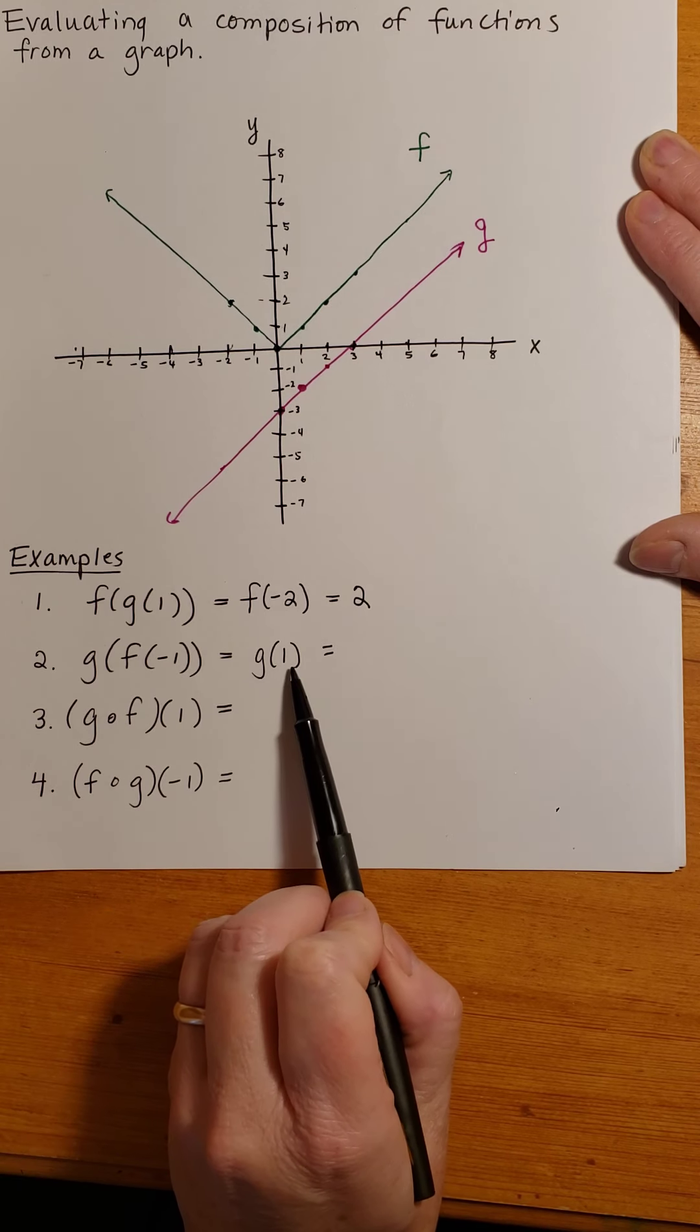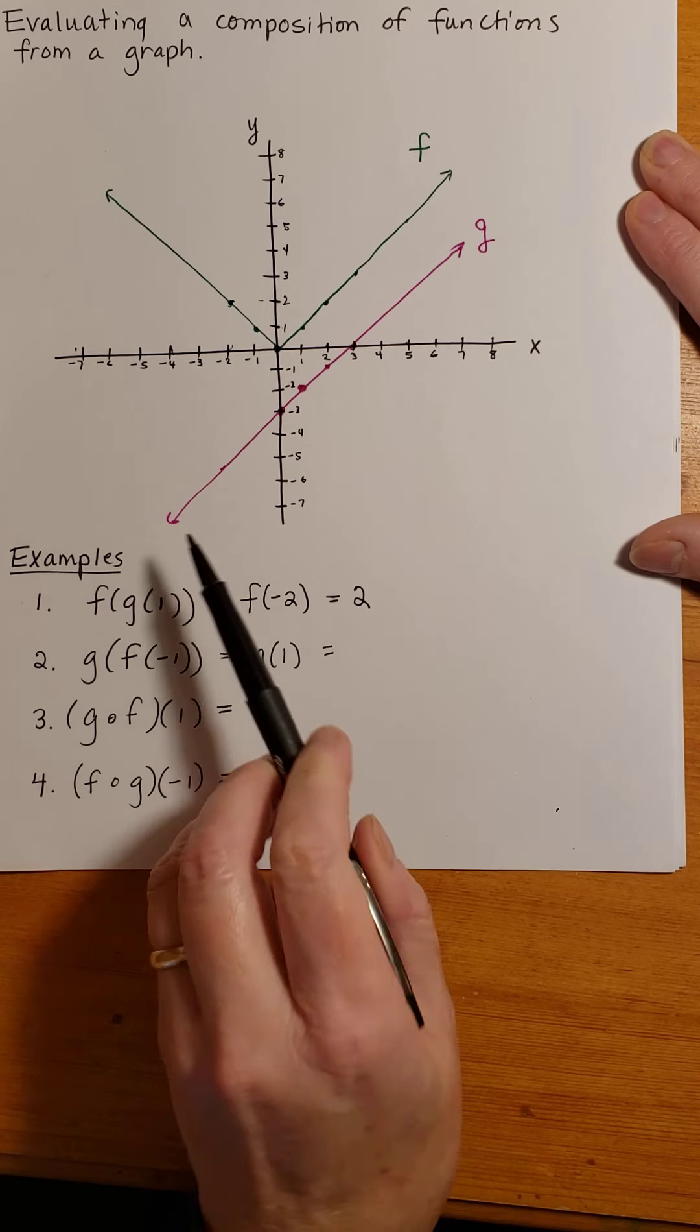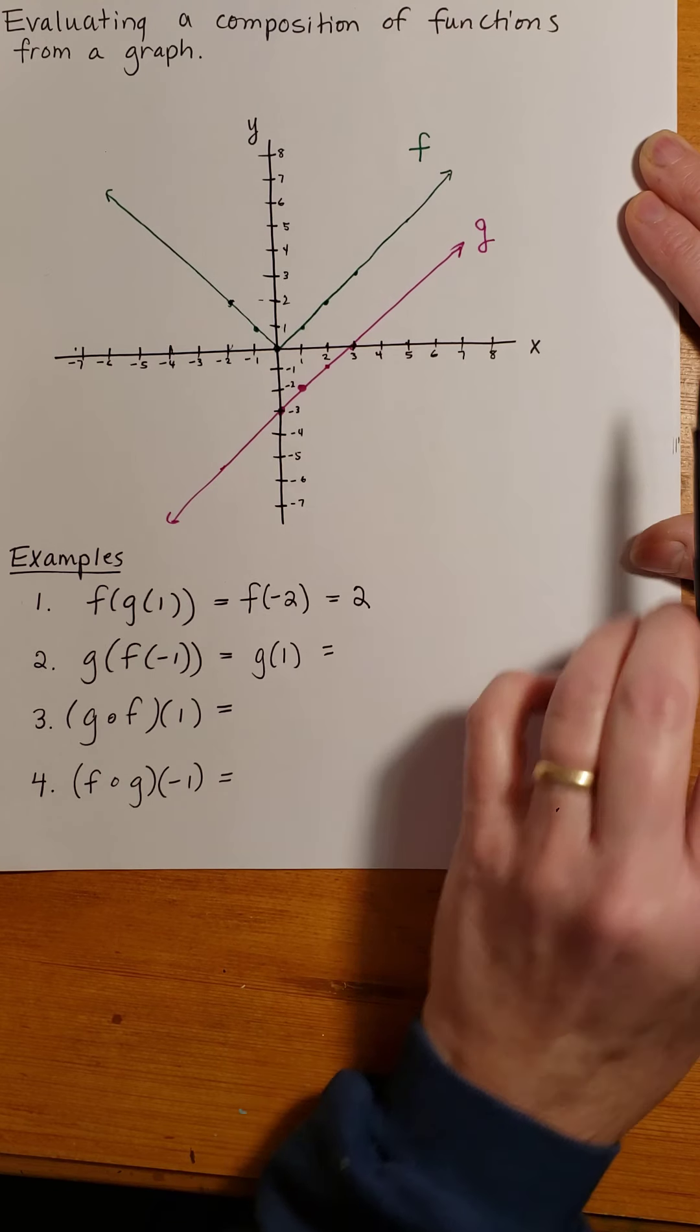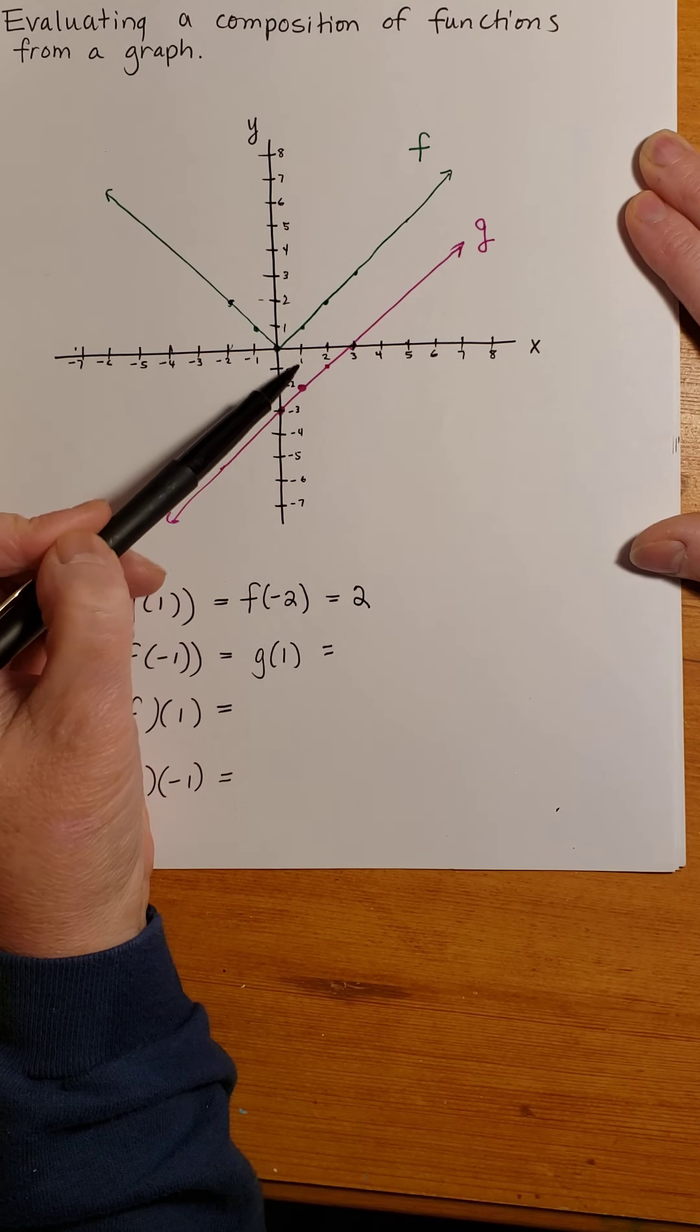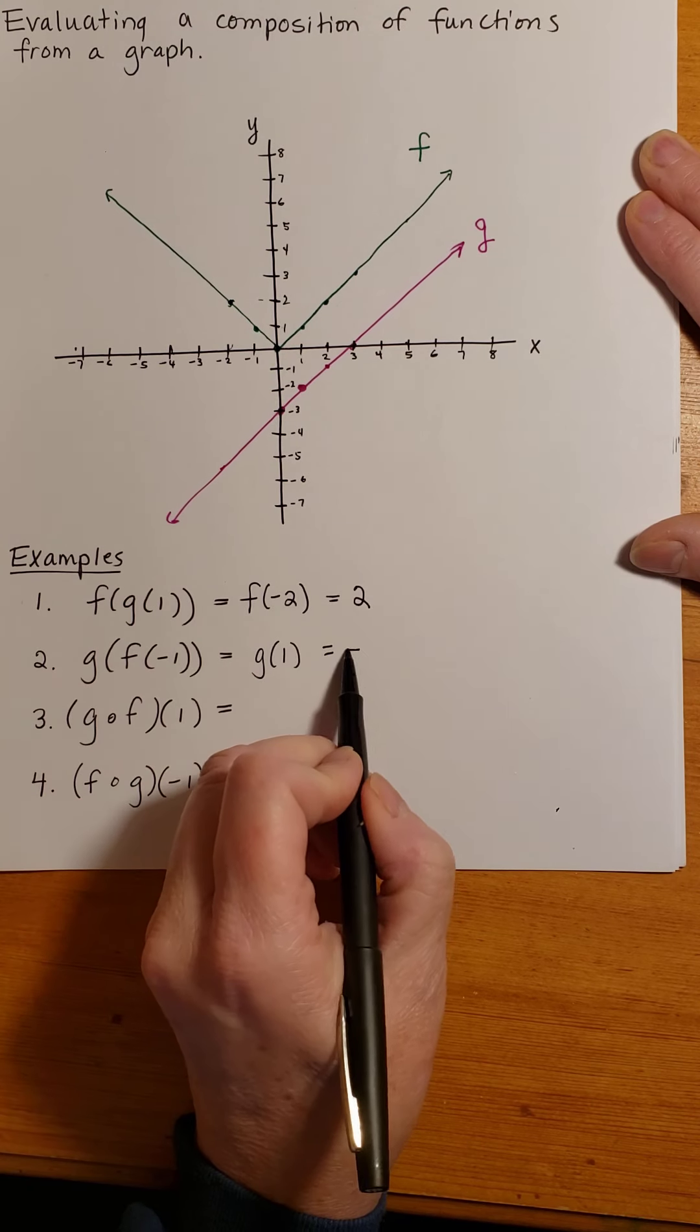Now I find g of 1, and I'm using this graph here. I go to 1, and then down to the vertical line, we're at negative 2.